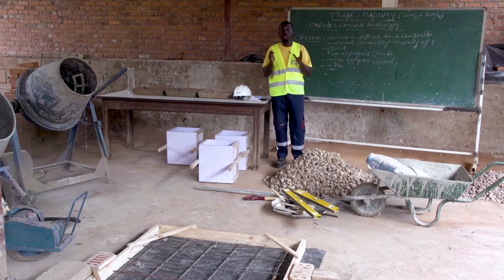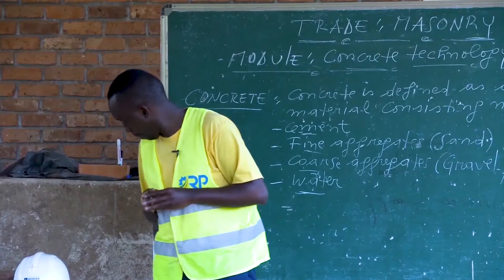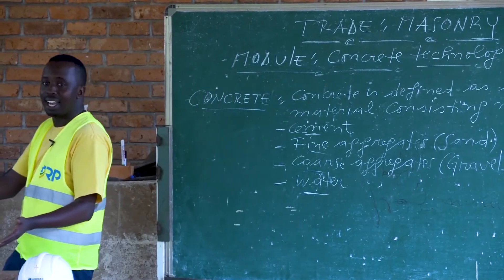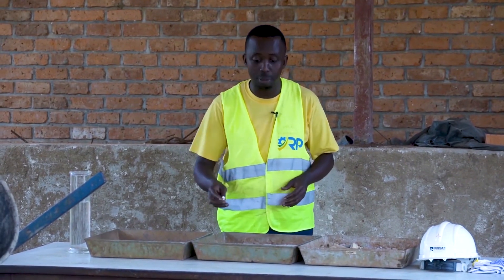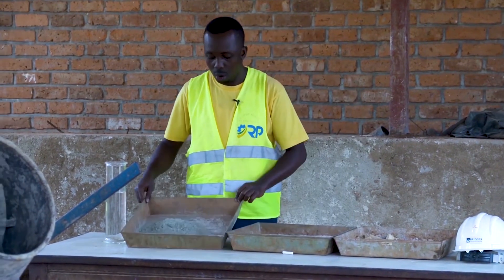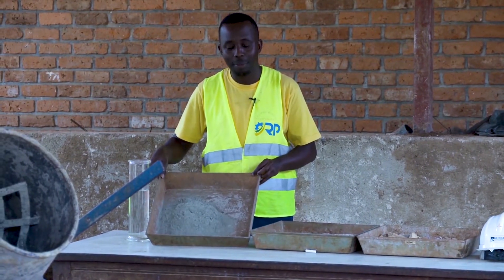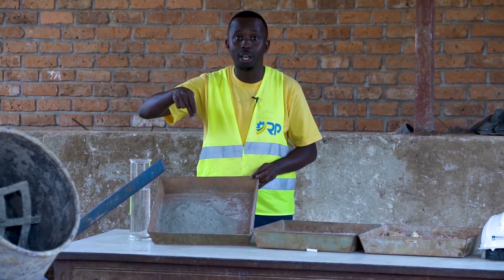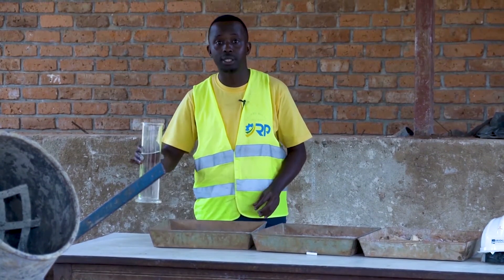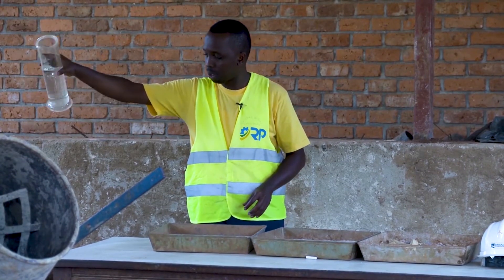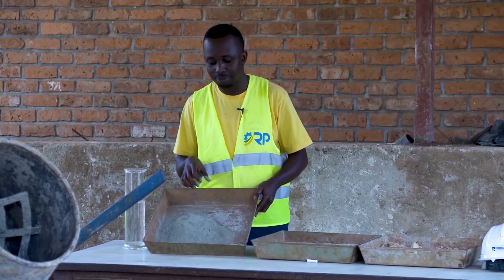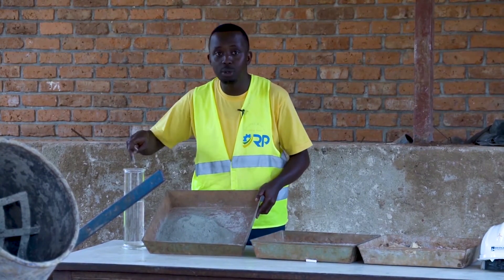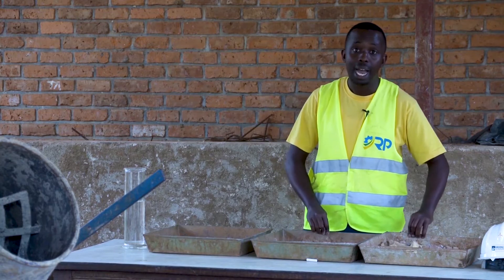What about the materials or the components for making concrete? These are the major ingredients or the materials for making concrete. We have the cement — this is the cement powder — and we have water. The function of cement in concrete is that when the cement powder is mixed with water, they form a paste.